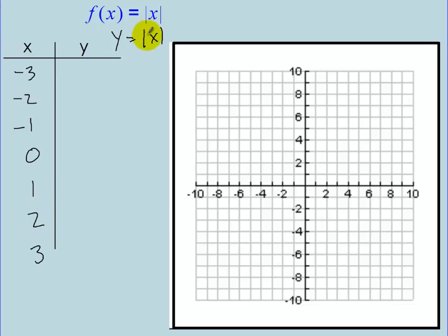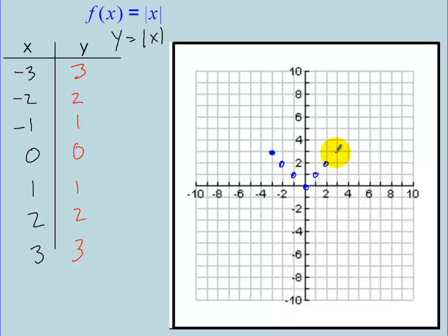For absolute value, it just turns the number into a positive number. So the absolute value of negative 3 is positive 3, then 2, 1, 0, 1, 2, 3. Plotting those points — negative 3 maps to 3, negative 2 to 2, negative 1 to 1, 0 to 0, and so on — it looks like straight lines going out like this. That's the function f of x equals the absolute value of x.